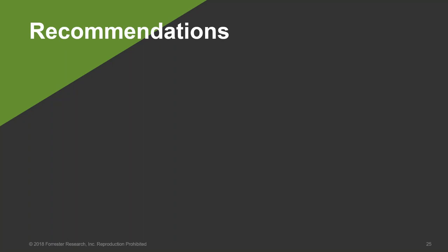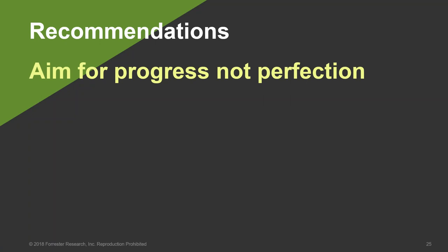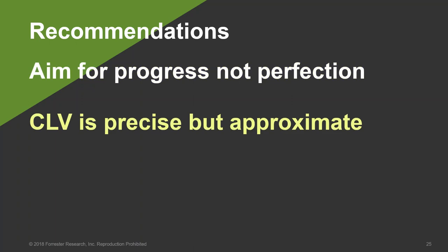A few final recommendations before I turn it over to Julie. First, aim for progress, not perfection. One of the issues with lifetime value is that the metric is never going to be perfect, but ultimately you're going to be using it to differentiate experiences, maybe to tier or segment customers. Progress is good enough. CLV is precise but approximate — by that I mean precision in that CLV ultimately expresses itself as a number in dollars and cents, so someone from finance might think it's accurate. But it's not. It's an approximate value.